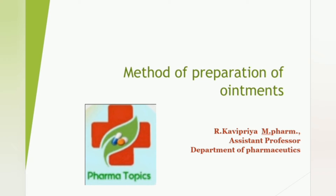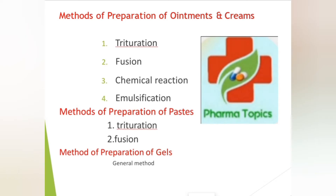We will cover each method one by one. For ointments and creams, there are four methods: trituration, fusion, chemical reaction, and emulsification. For pastes, there are two methods: trituration and fusion. For gels, there is only one method: the general trituration method.